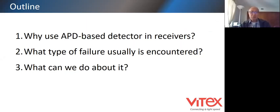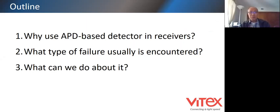Why? The first area is why to use APD-based detection in receivers nowadays. The second area is what type of failure is usually encountered and what can we do about it?